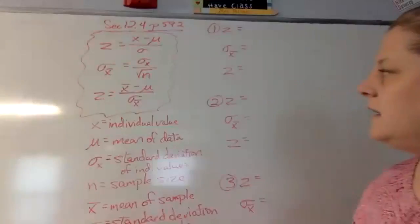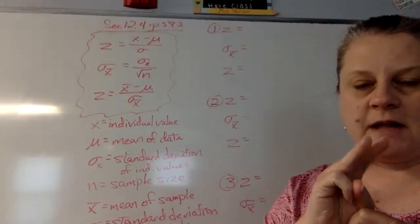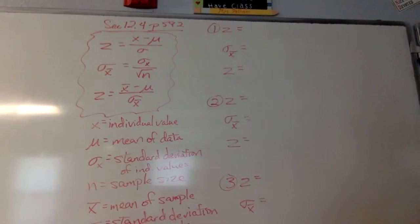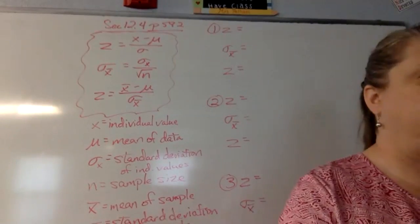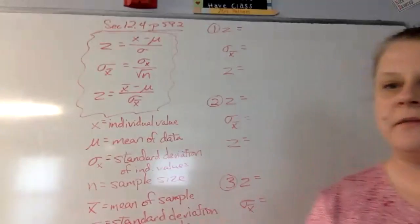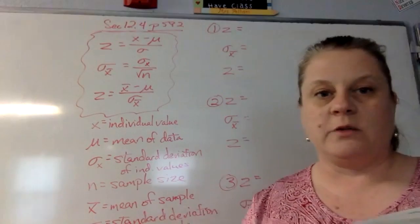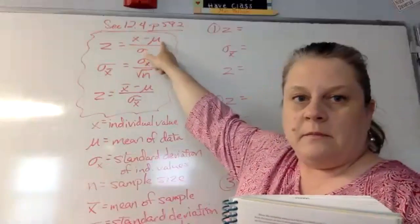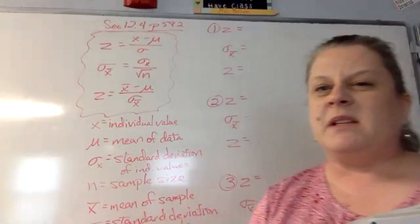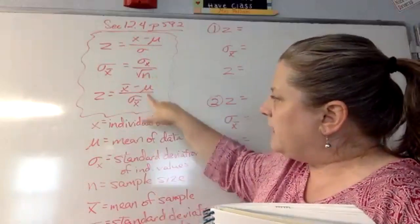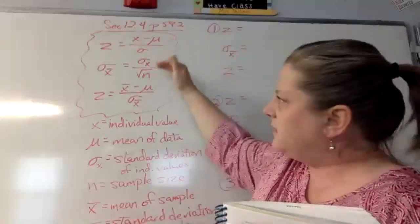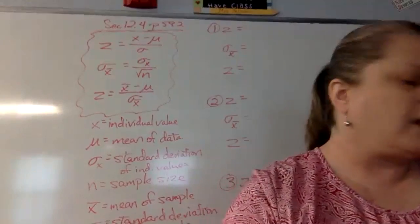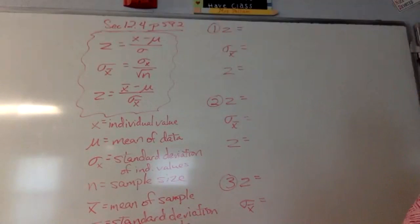On today's lesson we have basically three formulas we've got to use. We are talking about section 12.4, what they call sampling distribution. It's similar to some of the stuff we were doing the other day — remember when we were trying to find our z-score? You took x minus the mean over the standard deviation. That part's still the same, but then we have another thing to find and plug in. We start off the same basic way but there's a little bit more to it. I've got the three main formulas up here.